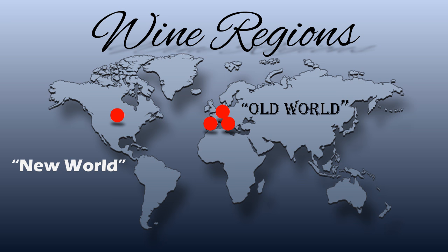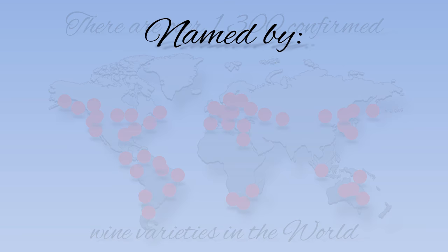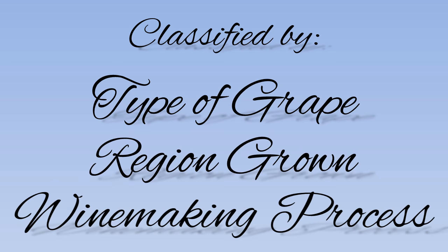New world is used to describe newer wine-producing regions such as the United States, Australia, and Chile. There are over 1,300 confirmed wine varieties in the world. Most wines are named in two ways: for their grape variety or for the place where the grapes grew. They are classified by the type of grapes used, where the grapes are grown, and the process the winemaker goes through to produce the wine.